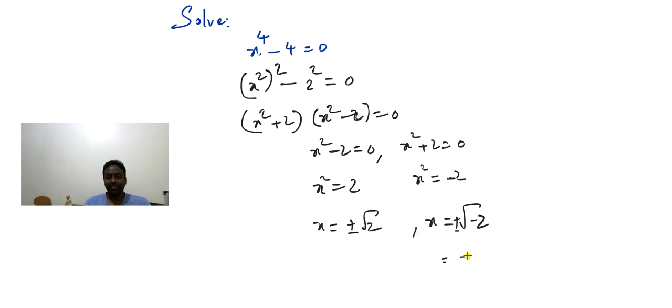I'm going to split it up like that, so plus or minus root 2 into root of minus 1. Root of minus 1 is i, so you have four solutions: plus or minus root 2 and plus or minus i root 2.